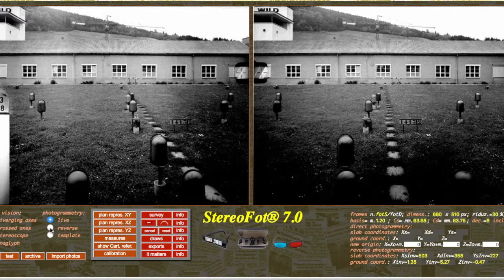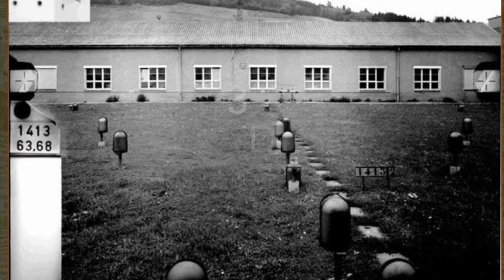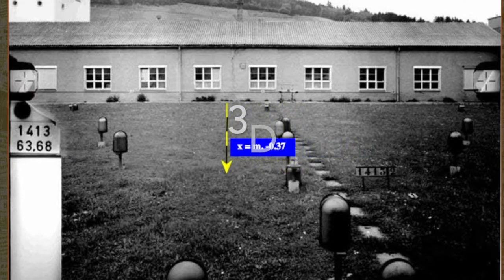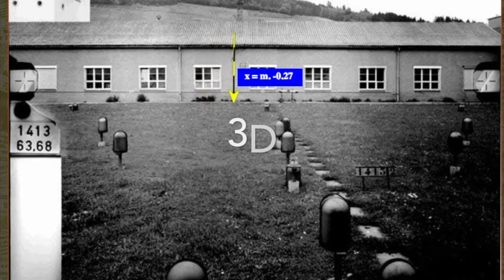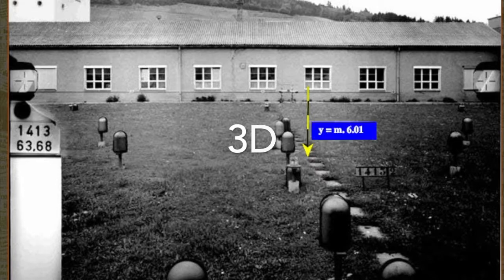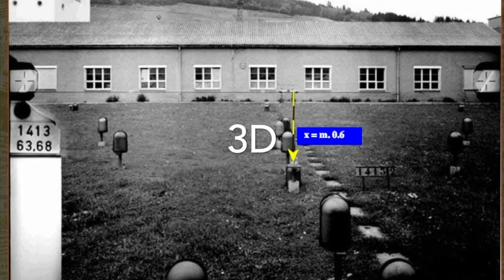By selecting the reverse radio button, the mobile mark is replaced by a pole colored yellow-black, which, in the photo on the left, is flanked by a field colored in blue. When the pole is moved in one of the three directions x, y, z, the field shows the value of the relative coordinate. The pole can be positioned on a chosen point.